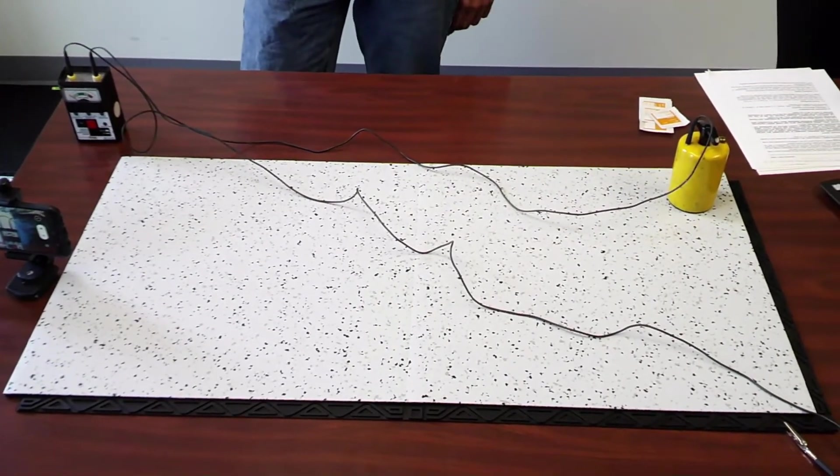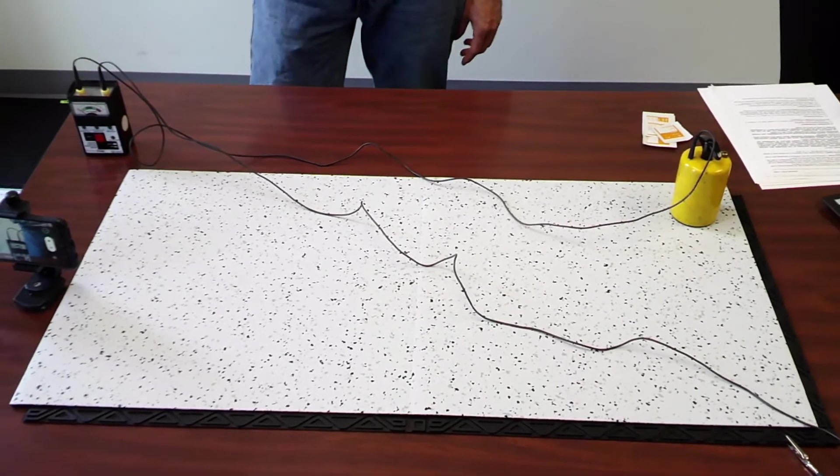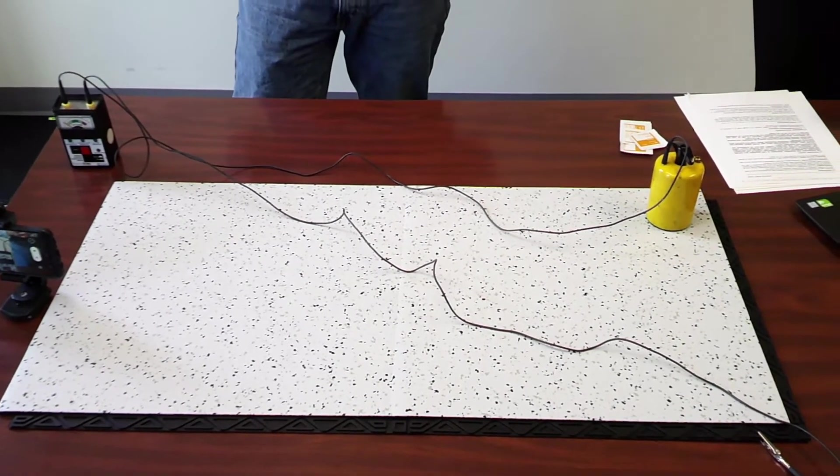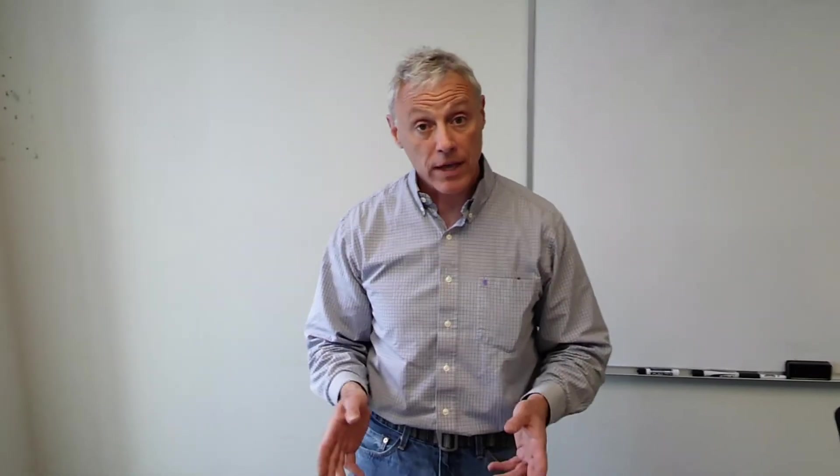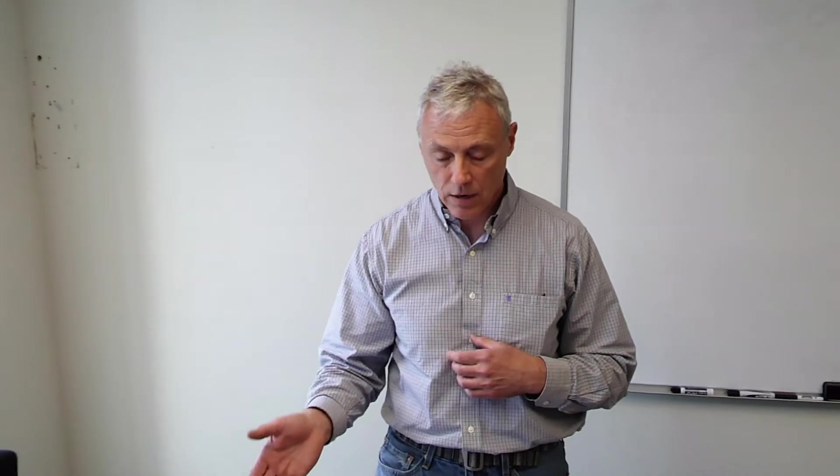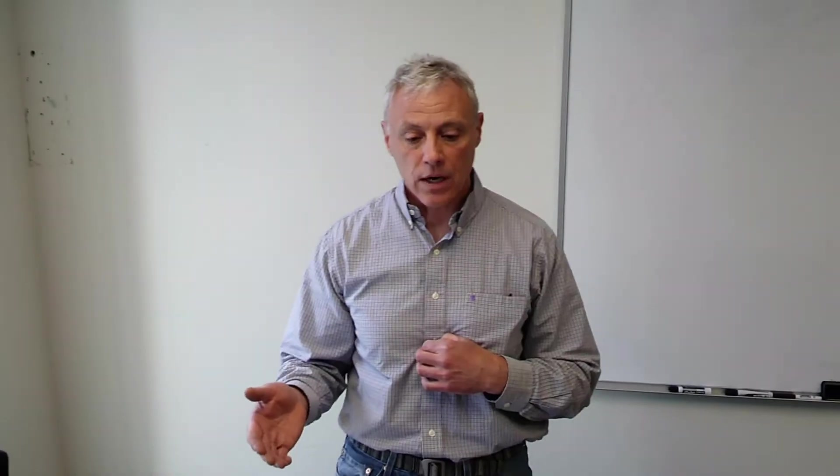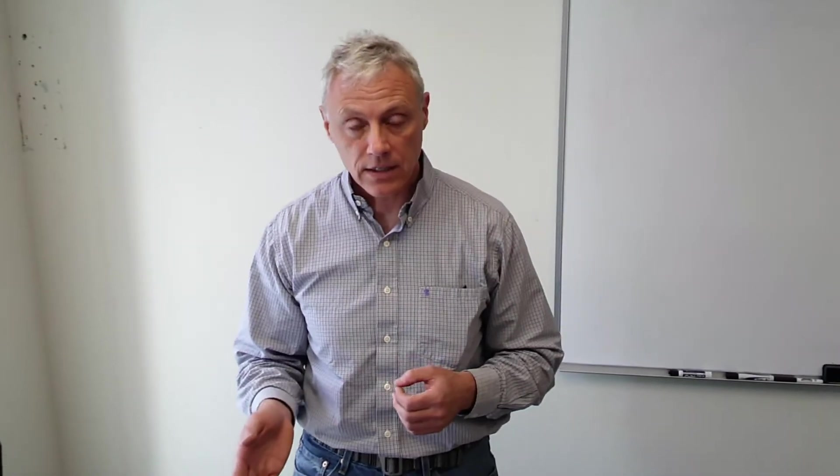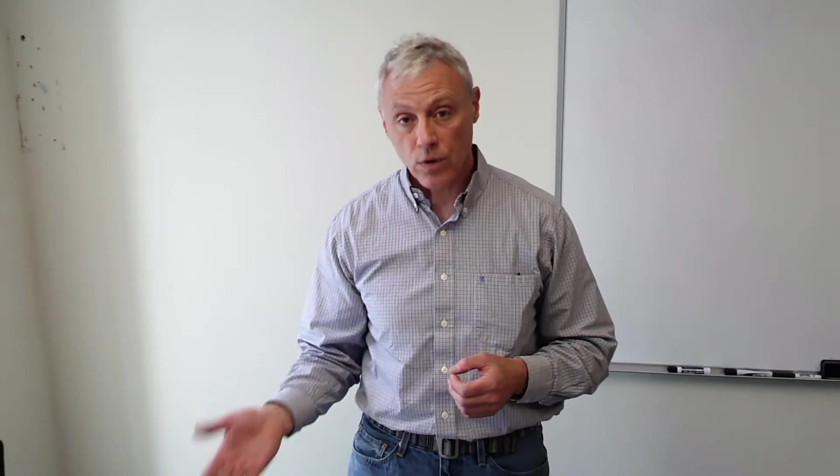These meters work by applying either 10 volts or 100 volts. Some meters automatically switch, some you have to change, some you can set. The way the standard test method works is you take a reading using 10 volts, and if the reading is above 10 to the sixth ohms, then you switch to 100 volts. There's a reason for that in terms of accuracy and reliability of the reading.